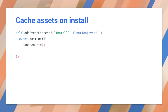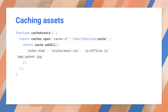Now let's look at storing resources with the cache API. A common pattern is to cache assets on service worker installation. Note that event.waitUntil ensures that the service worker does not terminate preemptively during async actions. In this example, we create a cache v1 cache and store static assets — that's HTML, CSS, JavaScript, and images — with the cache API.